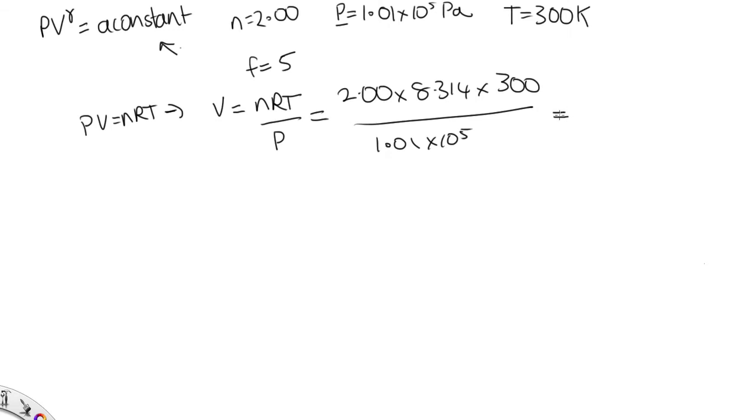Solving that on the calculator, we end up with 0.04939 meters cubed. Now, we've got V as well. So we just need to calculate gamma.